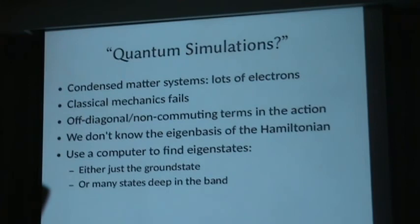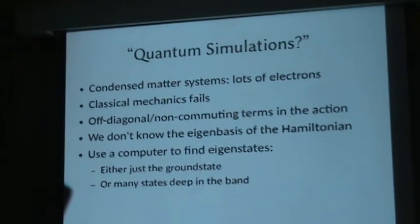Basically all of computational condensed matter physics is: find the eigenstates. Usually we only need one of them — the ground state. Or, for some newer problems, we need a bunch of states deep in the middle of the energy band.